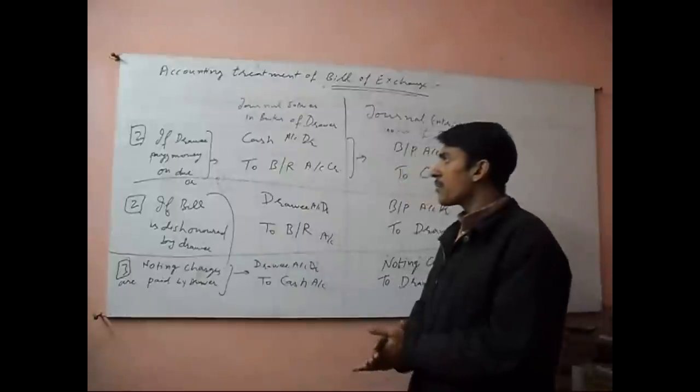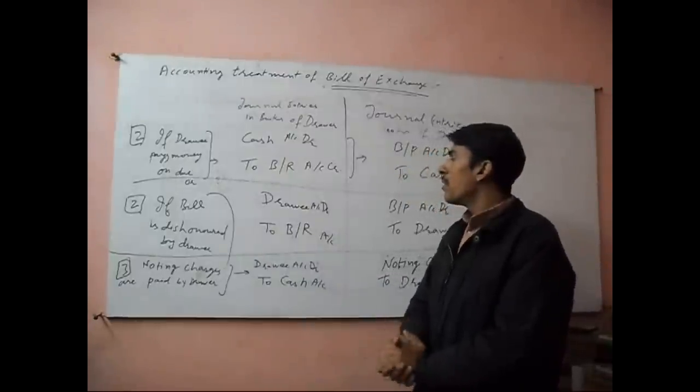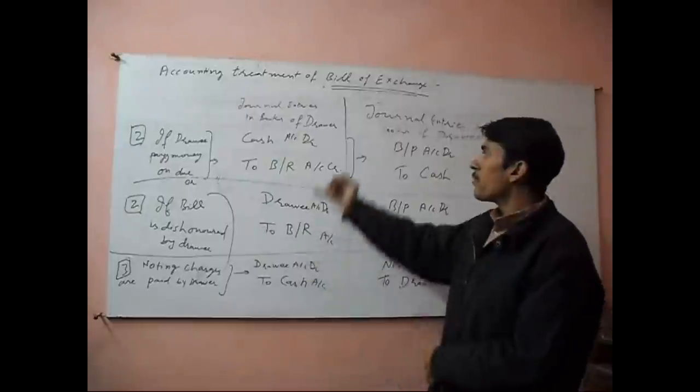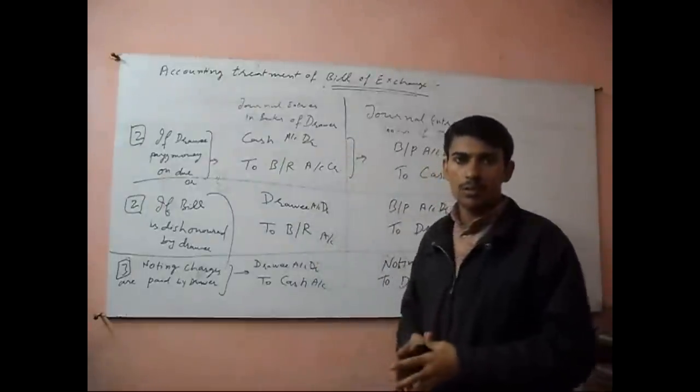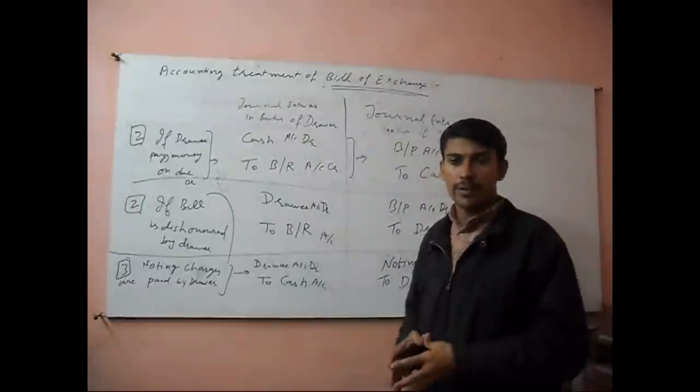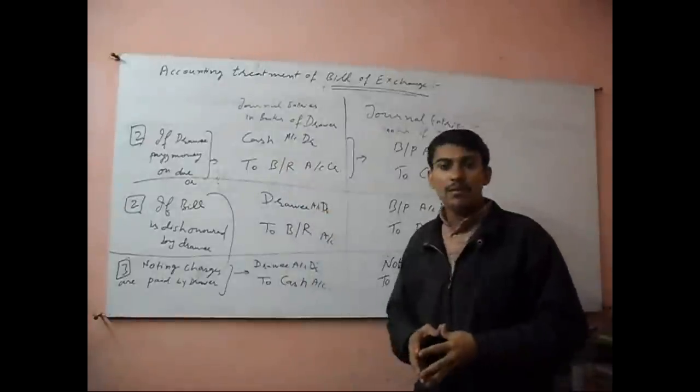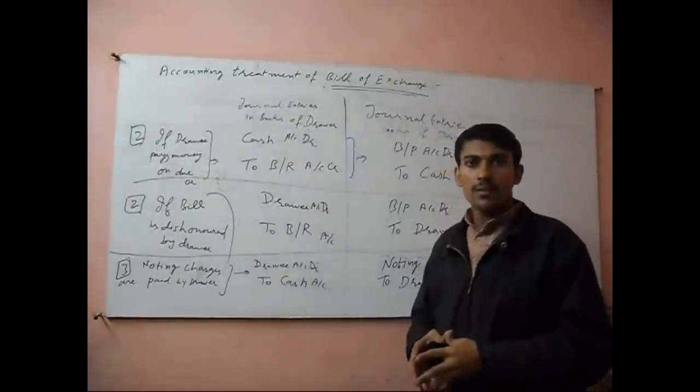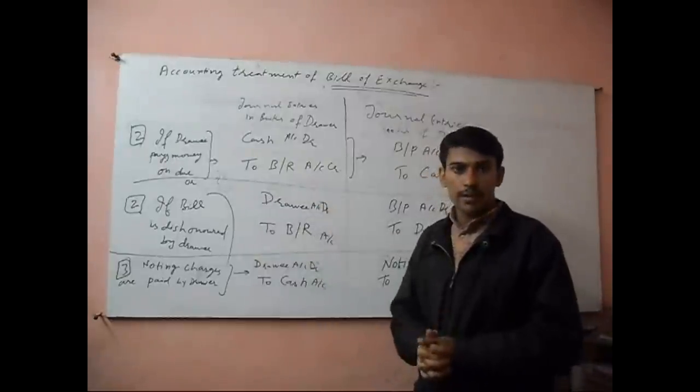If Drawer pays the money on due date, at that time we will pass the journal entry in the books of Drawer: cash account debit to bill receivable account. Because Drawer receives the cash, so it will be debit. And our current asset will decrease, so bill receivable account will credit.